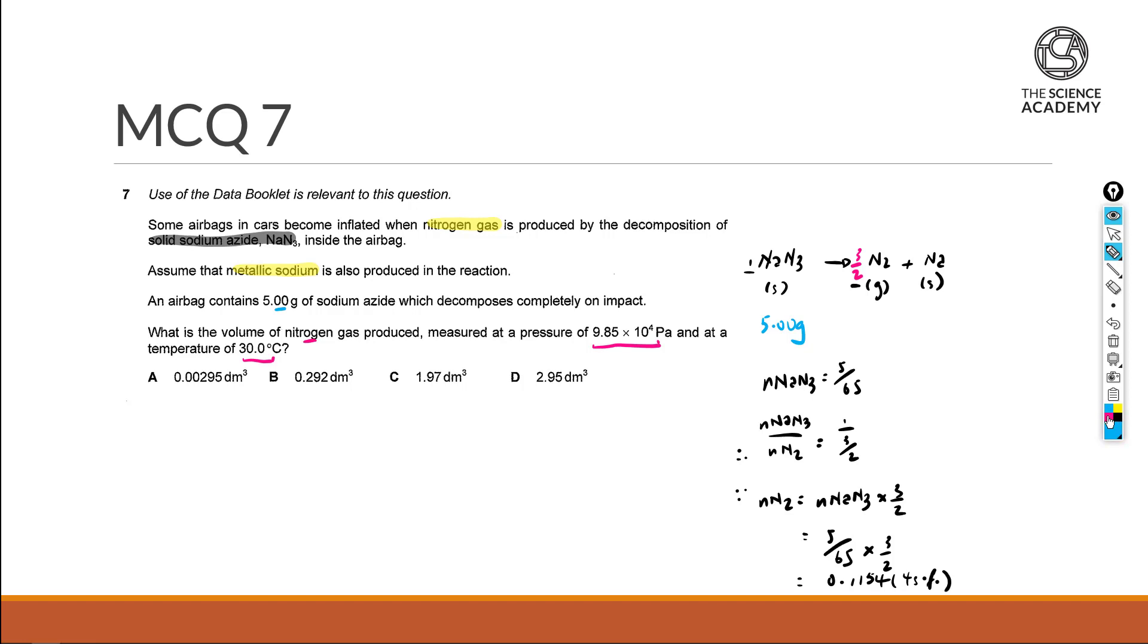Now slotting it into our ideal gas equation, PV equals to nRT. Just as a reminder, pressure should manifest as pascal, volume as meters cube, and temperature as kelvin.